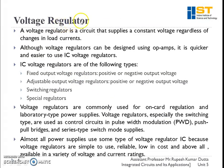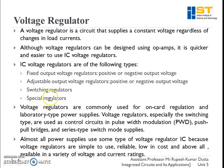Next are voltage regulator ICs. A voltage regulator is a circuit that supplies a constant voltage regardless of changes in load current. Although we can have voltage regulators using op-amps as we just learned, it is quicker and easier to use IC voltage regulators. These come in the following types: fixed and adjustable output voltage regulators, both in positive or negative output voltage, switching regulators, and special regulators. Voltage regulators are commonly used for on-card regulation and lab-type power supplies.